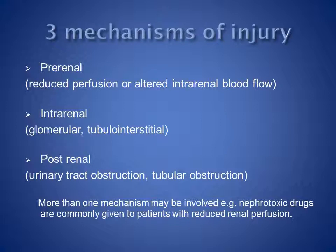Broadly speaking, there are three causes of acute kidney injury. The first is pre-renal injury, caused by reduced renal perfusion. The second is intrarenal injury, which can be glomerular or tubulo-interstitial. And the third is post-renal injury, which can be caused by anatomical urinary tract obstruction or tubular obstruction.